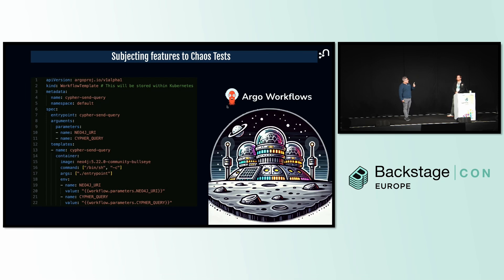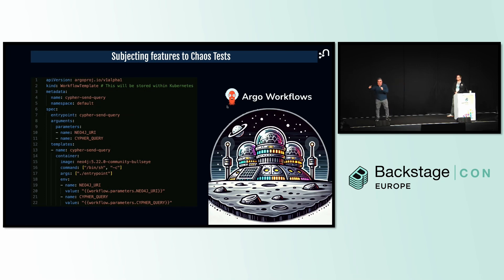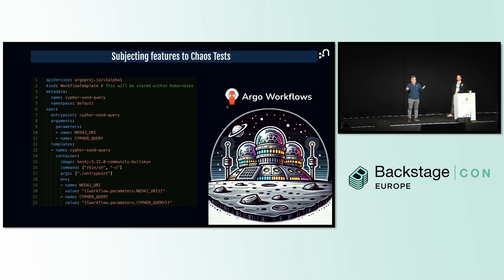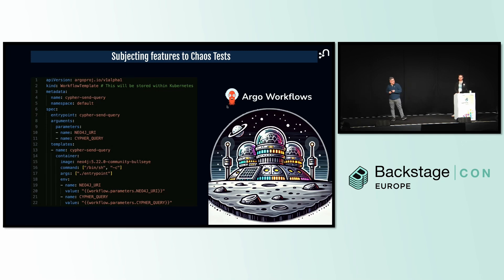This is a basic example — you can go as crazy as you want. You can see that a workflow template is being created. Once you install Argo Workflows in your cluster, Kubernetes will understand what a workflow template is. Think of it like a VHS cassette: you create the template and can replay it over and over again. In this example, the template is named 'cypher-send-query', it lives in the default namespace, and it needs two incoming parameters to run. The custom business logic starts on line 13, where we're pulling down the official Neo4j Cypher image to run Cypher requests against the database in the hopes that we can break it.